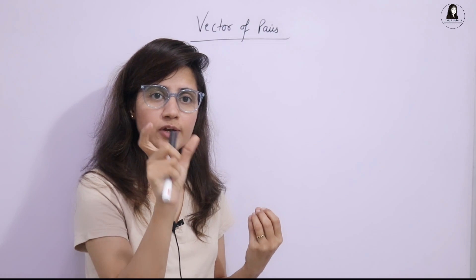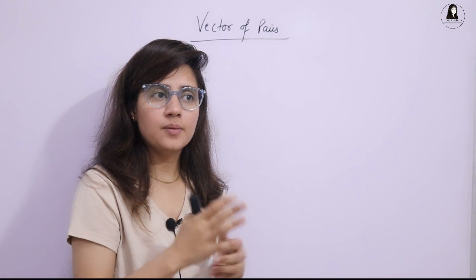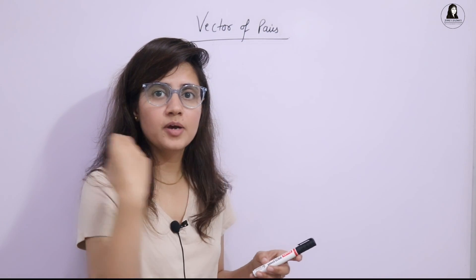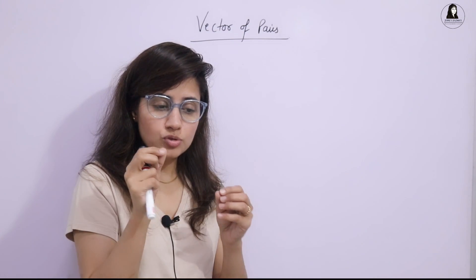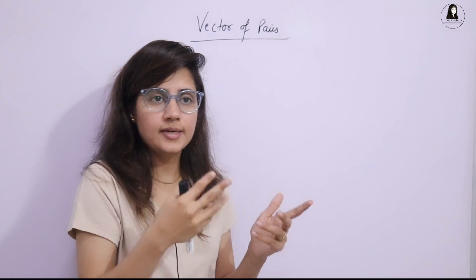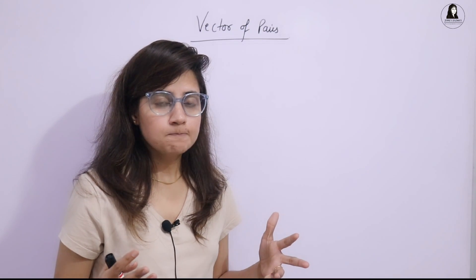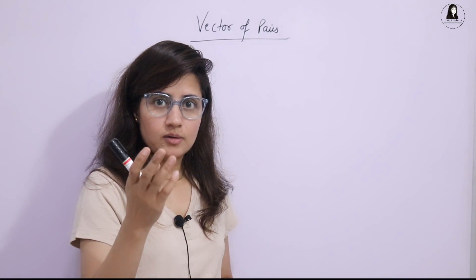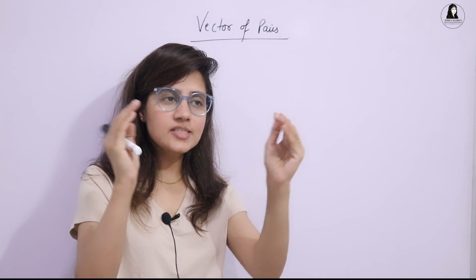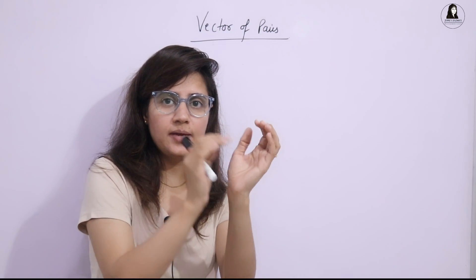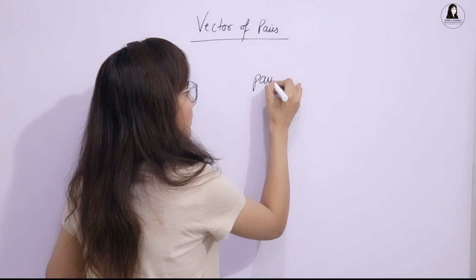A pair is a set of two things — if you combine two values, that is called a pair. For example, a pair of shoes. The values can be of the same type or different types like int-int, int-string, or string-bool. For example, student details: name plus roll number — name is a string, roll number is an integer — we can store this as a single object using a pair.